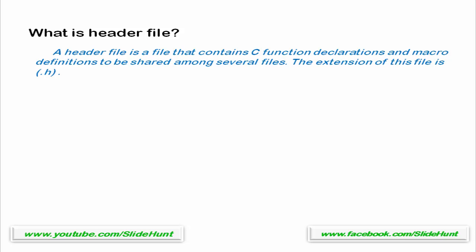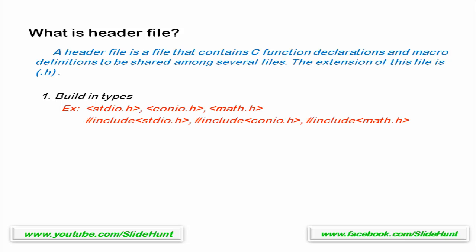There are two types of header files. The first type is files that come with your compiler, or you can call them built-in types. For example, stdio.h, conio.h, math.h, etc. These files are included in the source file using the preprocessor directive #include, and the file name must be written inside angle brackets.